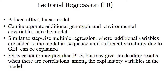Factorial regression is a fixed-effect linear model. It can incorporate additional genotypic and environmental co-variables into the model. It is similar to stepwise multiple regression, where additional variables are added to the model in sequence until sufficient variability due to G×E interaction can be explained. Factorial regression is easier to interpret than the previous models but may give misleading results when there are correlations among the explanatory variables in the model.